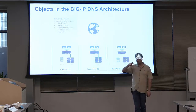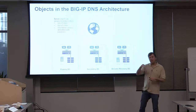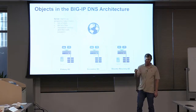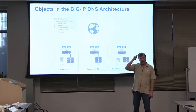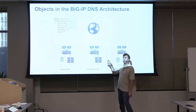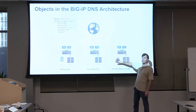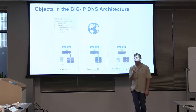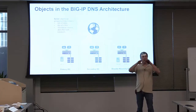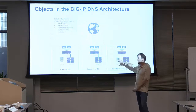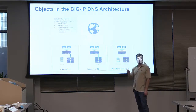The next object you configure is called a server object — server objects are the high-level objects. It doesn't have to be a virtual server on another BIG-IP platform; it could just be an individual server, like an Apache web server. This is kind of equivalent to nodes in LTM — the node is the higher-level object, and underneath that are pool members with ports. Server objects follow the same idea: it's the higher-level object that represents the node or server itself.